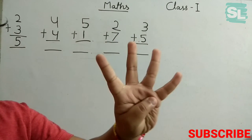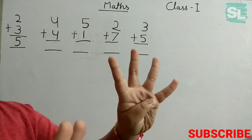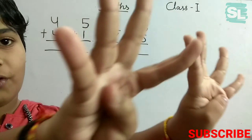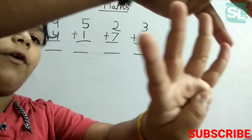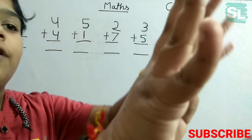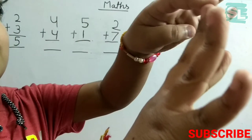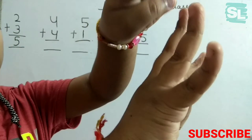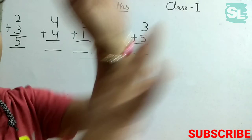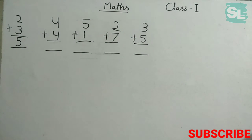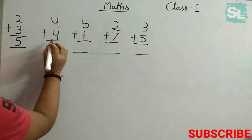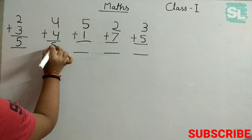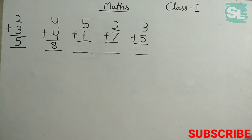5 plus 4. Let's count: 1, 2, 3, 4 — 5, 6, 7, 8. So the answer will be 8. Let's write it here.